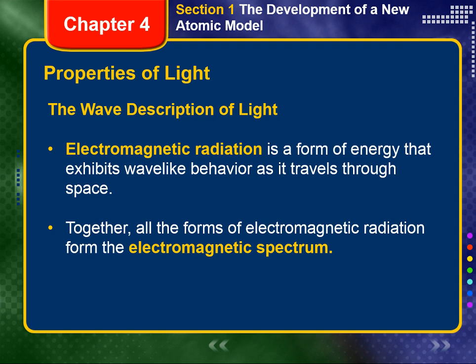In the early 20th century, a new atomic model evolved as a result of investigations into the absorption and emission of light by matter. These studies revealed an intimate relationship between light and an atom's electrons. This new understanding led directly to a revolutionary view of the nature of energy, matter, and atomic structure.